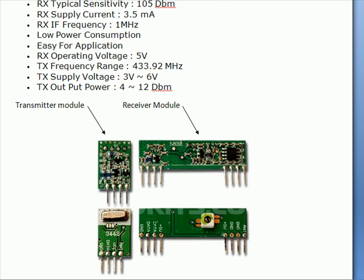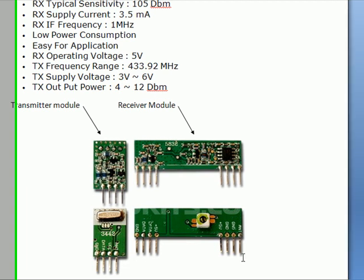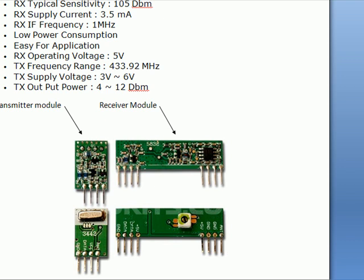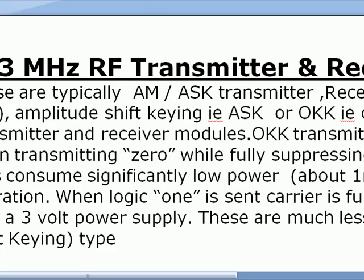The data comes from the HT12E and is transmitted by the antenna connected here. It is then received by the antenna on the receiver side. The signal travels from the transmitter antenna and is picked up by the receiver antenna.